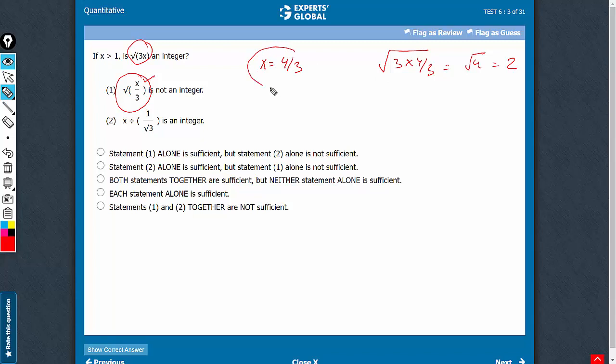Therefore, for such cases, we get yes as the answer that yes, the value of √(3x) is an integer. And of course, for a lot of values, say x = 5, you will get no as answer.